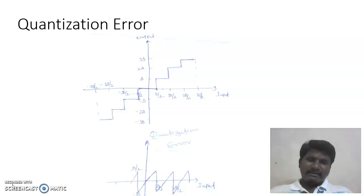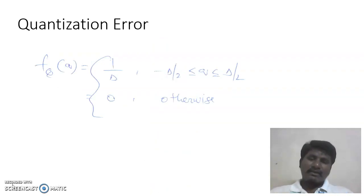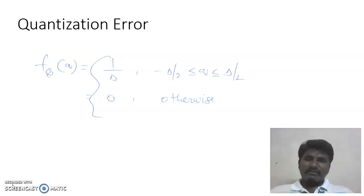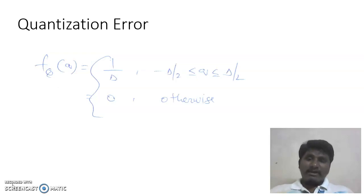The quantization error varies linearly between −δ/2 and δ/2. We can think of the quantization error as a random variable q, which is uniformly distributed over −δ/2 to δ/2. For a uniform random variable between a and b, the probability density function is 1/(b − a). Here, a = −δ/2 and b = δ/2, so the PDF equals 1/δ.